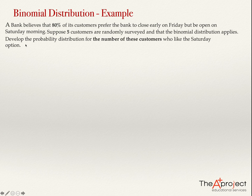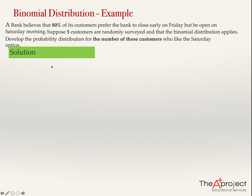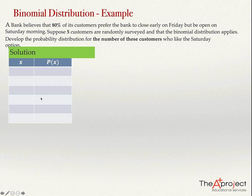We are asked to develop the probability distribution for the number of customers who like the Saturday option — this will be our random variable. The probability distribution is just a table that lists all the possible values of the variable and their probabilities.